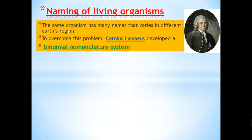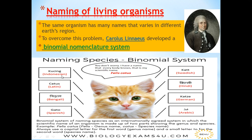This scientist is called Carlos Linnaeus. Carlos Linnaeus created the binomial nomenclature system — a system that gives each living organism a unique scientific name used in different areas of the world. For example, the cat is called 'Qutta' in Egypt, 'Cat' in English, and has different names in Indonesian, Latin, Swedish, Hindi, German, and so on. So Linnaeus made the binomial nomenclature system to create one universal scientific name for each living organism.